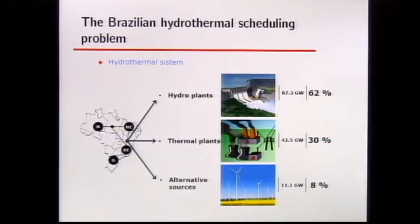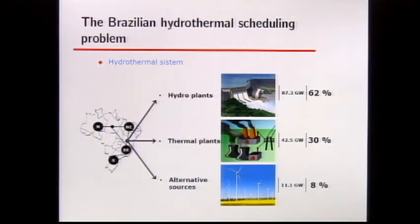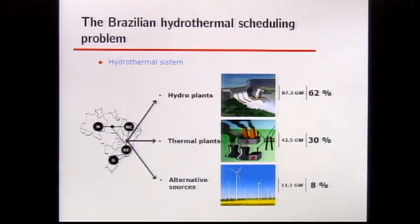Let me start with some characteristics of the Brazilian hydrothermal scheduling problem. It is predominantly hydraulic — around 62% of the total power generation is due to hydro plants. The complement is due to thermal plants, 30%, and 8% from alternative sources like eolic power generation. The main source of uncertainty is the amount of water arriving into the hydro plants' reservoirs.